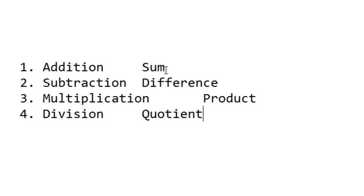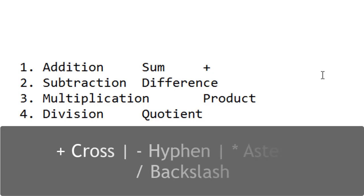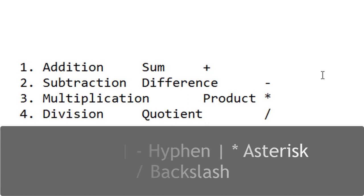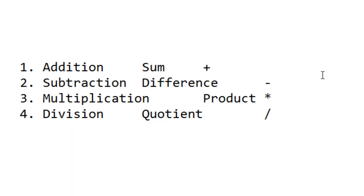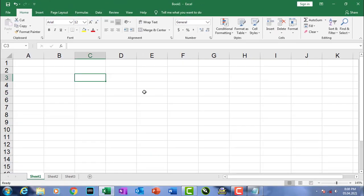Before starting to perform these operations over the sheet, we have to learn the different symbols used for these operations: the plus symbol for addition, the minus symbol for subtraction, the asterisk symbol for multiplication, and the forward slash symbol for division. I'm going to explain the addition process with a suitable example.